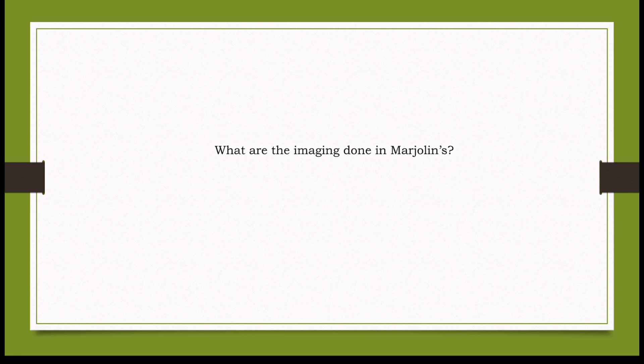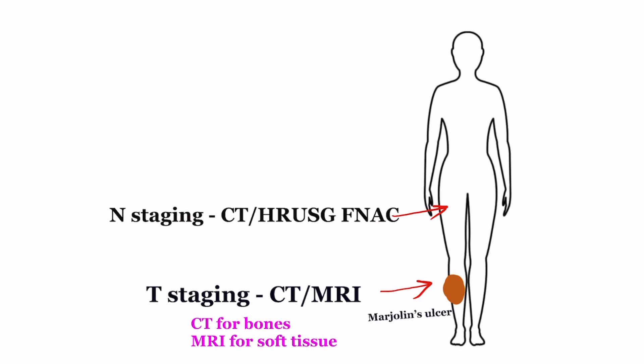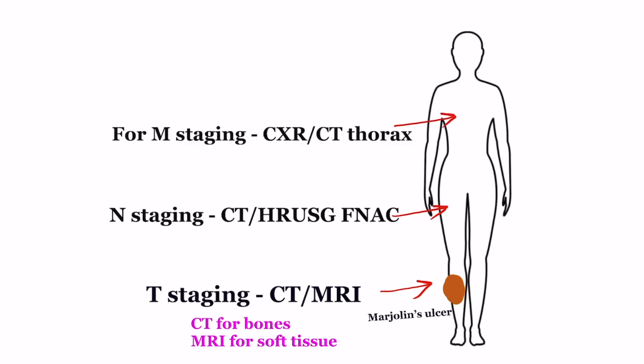What imaging is done in Marjolin's ulcer? For primary tumor staging, CT scan and MRI are useful in assessing involvement of deeper tissues — CT is better for bone involvement while MRI is good for soft tissue involvement. For regional nodal staging, in addition to clinical examination, CT or high-resolution ultrasound is done. As the lung is the most common site of metastasis, CT thorax or chest X-ray is also performed.